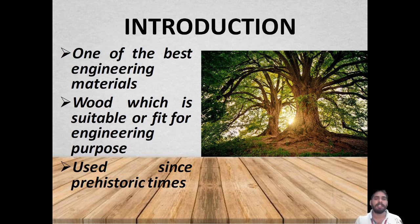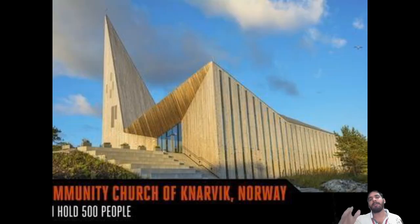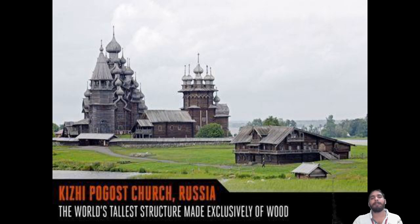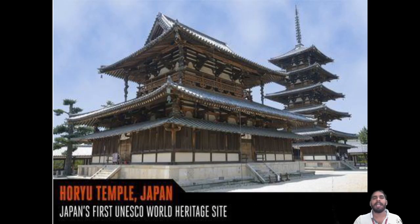There are notable historical wooden structures around the world. A wooden bridge was built in Myanmar since 1850. There is also a wooden structure called the Kizhi Pogost Church in Russia, made exclusively of wood. The Horyu Temple in Japan is a world heritage site — you can search on Google to get more details about these structures.